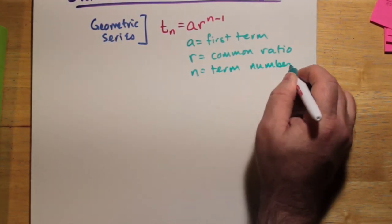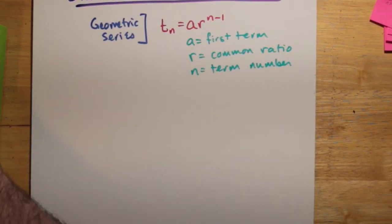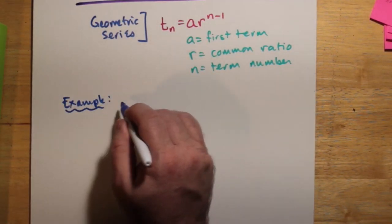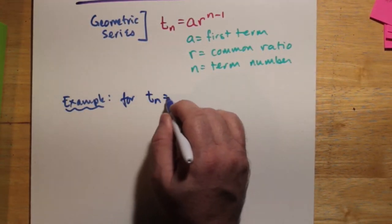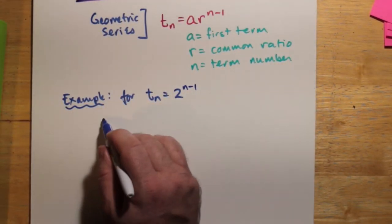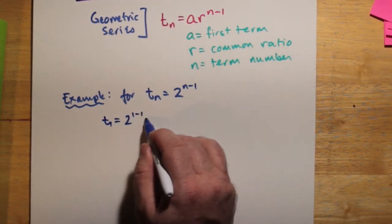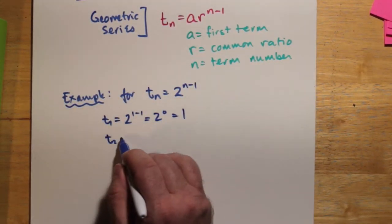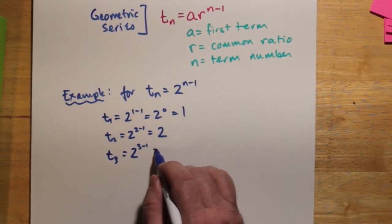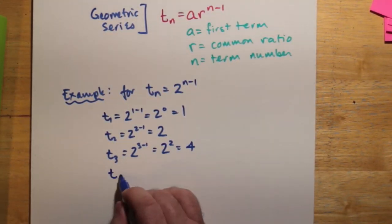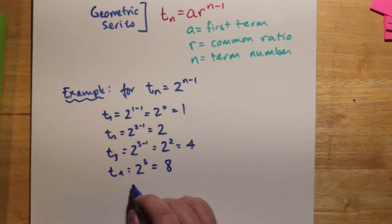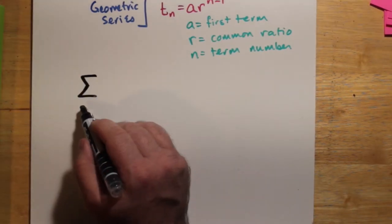So, let's say that we just use something innocent. 2 to the n, or sorry, 2 to the n minus 1. So, that's t1, and we plug that in. That's 2 to the 0, which is 1. t2, that's 2 to the 2 minus 1, which becomes 2. 2 to the 3 minus 1 for t3 becomes 2 squared, or 4. You get the idea. You just keep plugging things into n to get the next term.